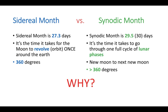The synodic month is the amount of time it's going to take the moon to go through its full cycle of lunar phases — so from new moon to the next new moon, how long does that take? Or from full moon to the next full moon? That takes exactly 29.5 days, which we tend to round up to 30 days, for the moon to do its full cycle of phases every month.